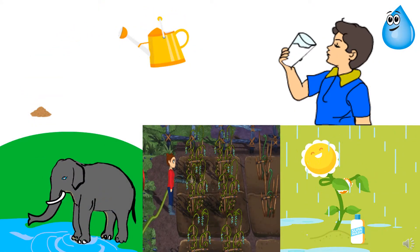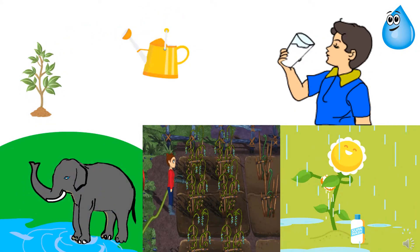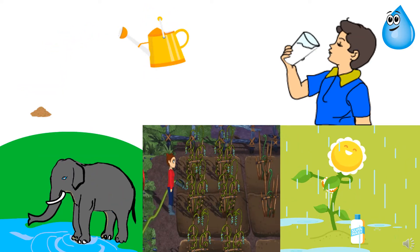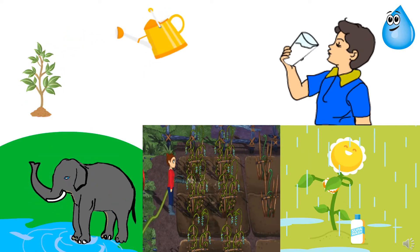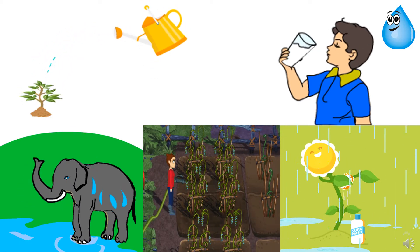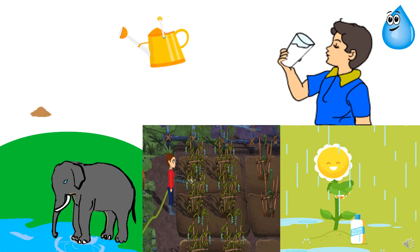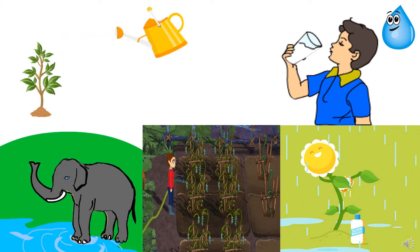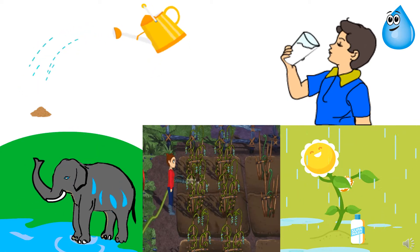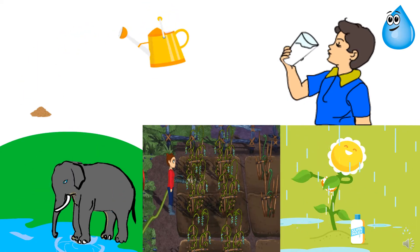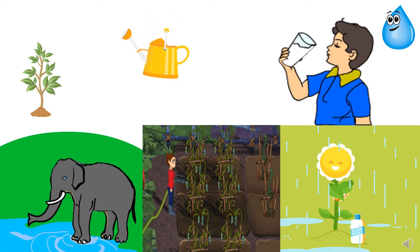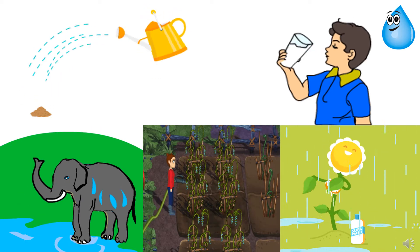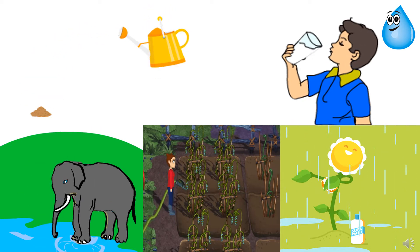Water is the precious element for all the living things. Humans, animals and plants — they all need water for their survival and growth.